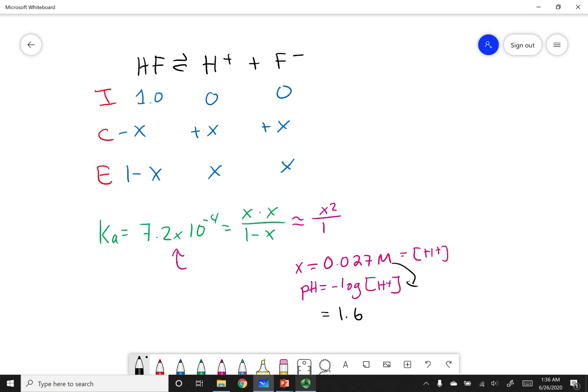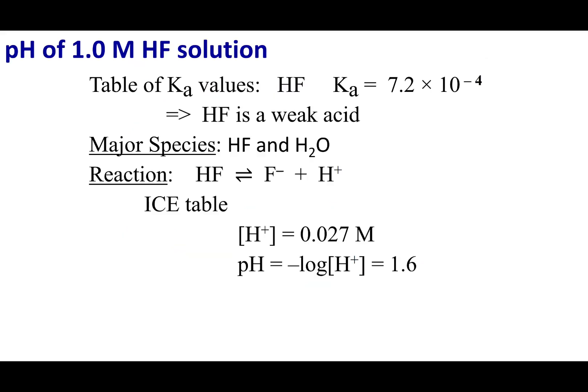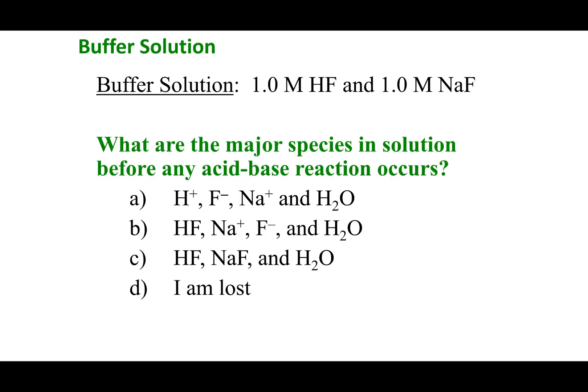You should be fairly comfortable doing this type of problem because that's what we spent all of chapter 7 doing. Now that we can calculate the H+ concentration and pH of a simple weak acid in solution, let's see what happens when we try to make buffers. I want you to identify the major species when I add HF and NaF in solution.